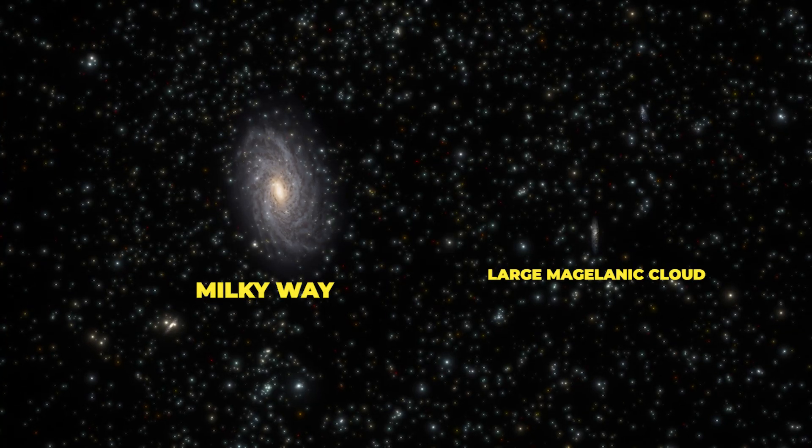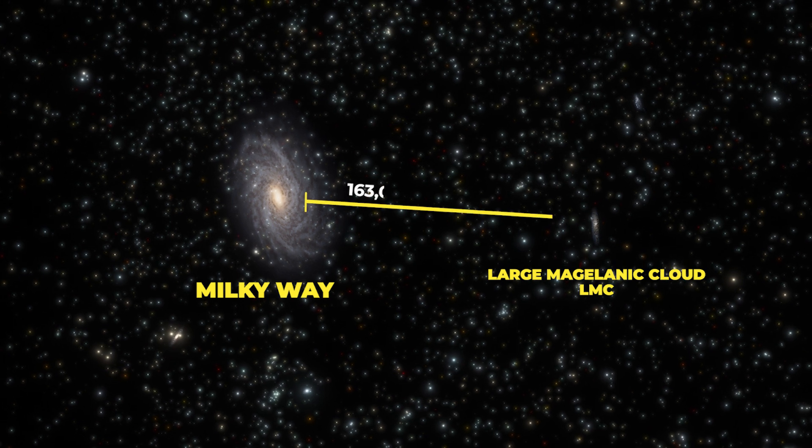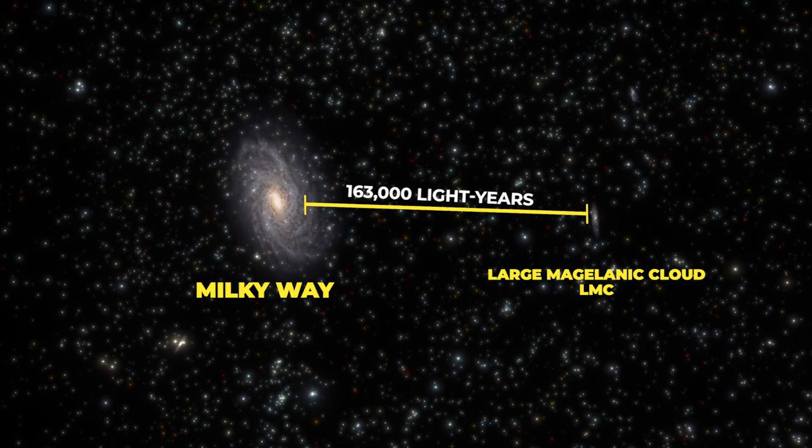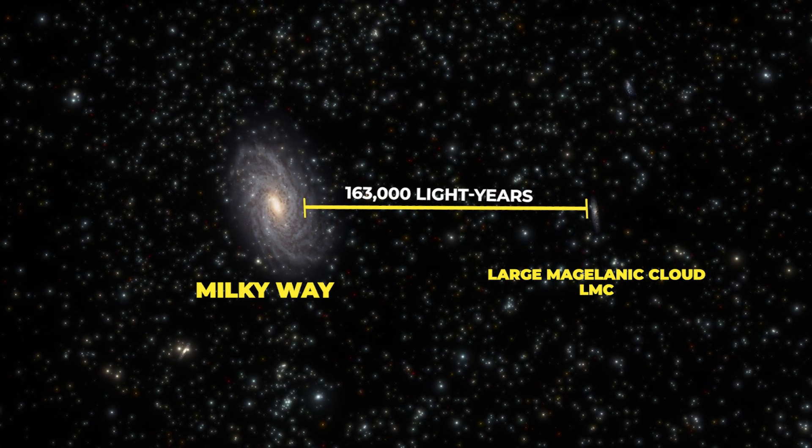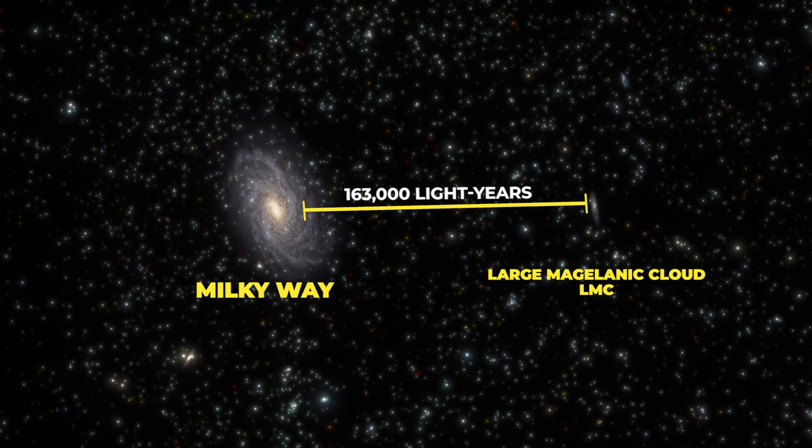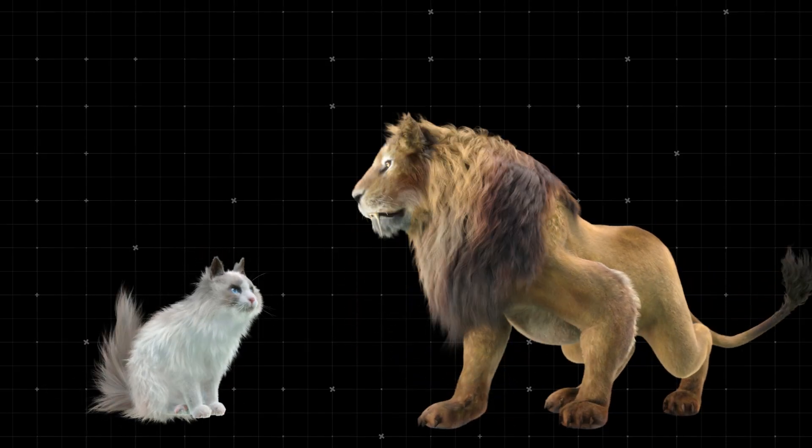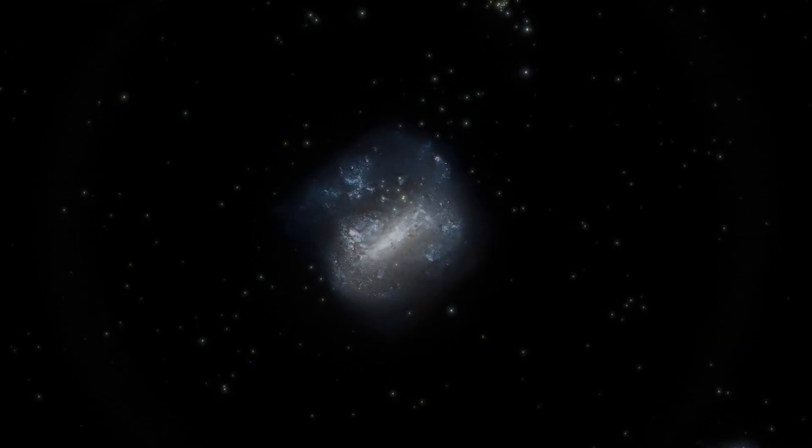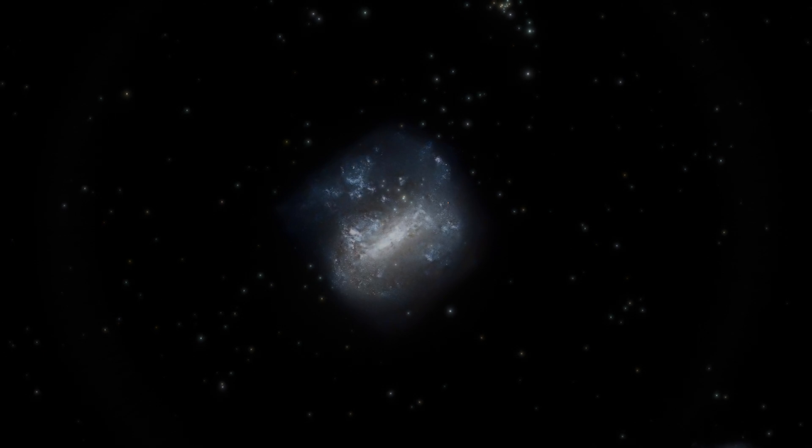The Large Magellanic Cloud, or LMC for short, lies about 163,000 light-years away and is one of the closest galaxies to the Milky Way. Compared to our Milky Way, it's like putting a house cat next to a lion. We're talking about a galaxy just 10% the mass of ours.